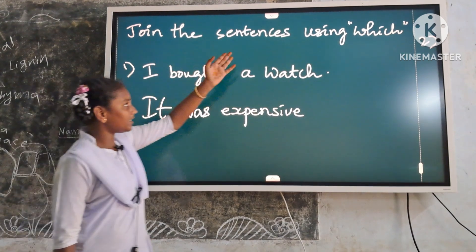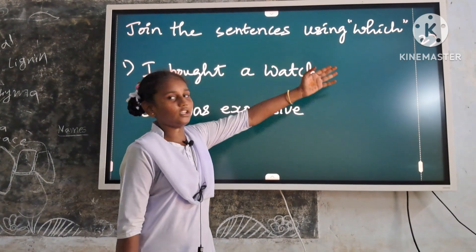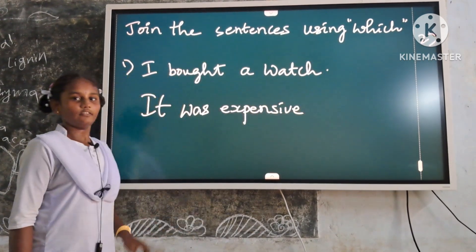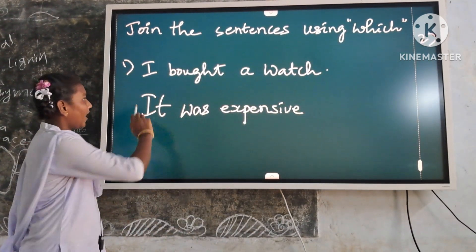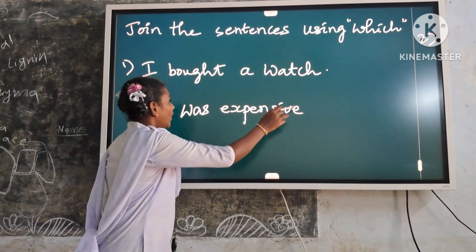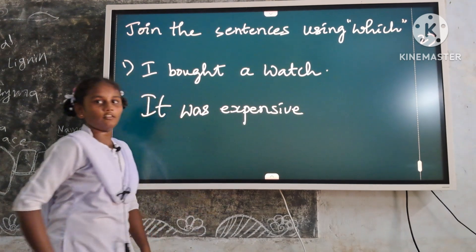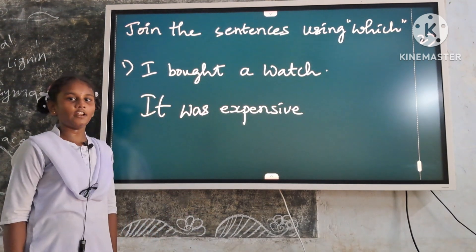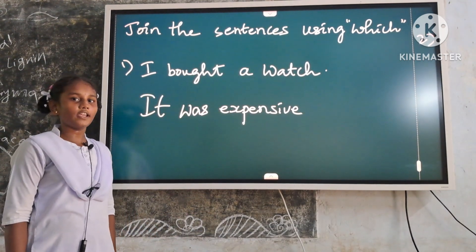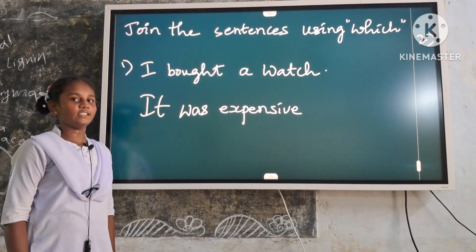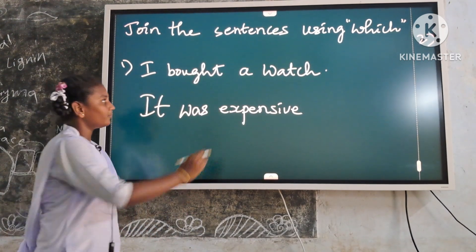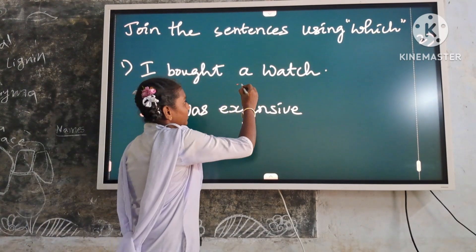Now, exercise. Join the sentences using which. First example: I bought a watch. It was expensive. Here, the noun phrase of things is 'a watch.'